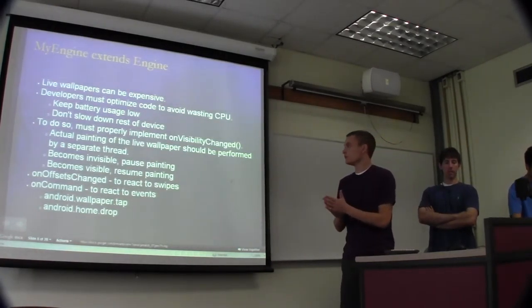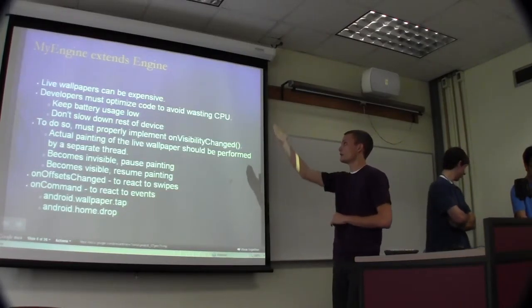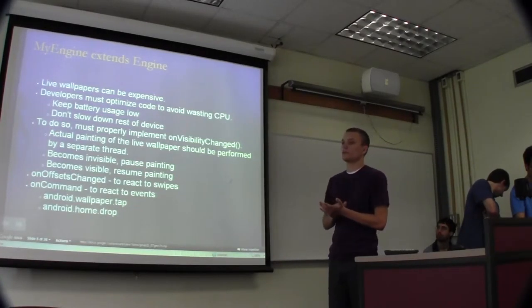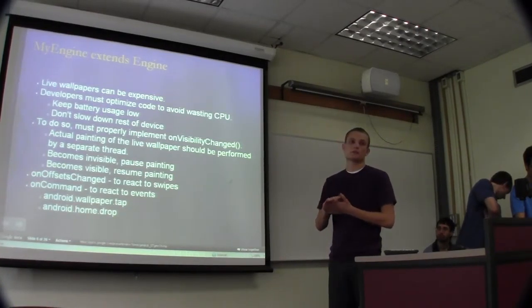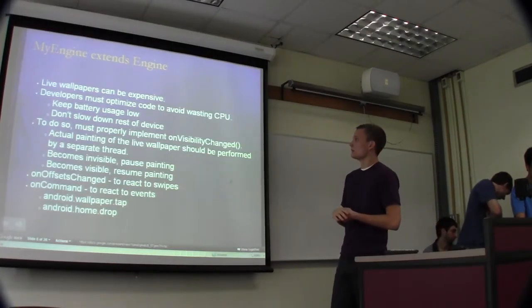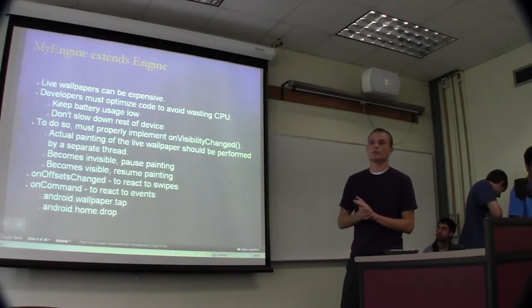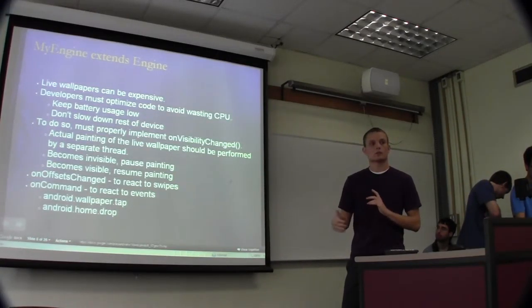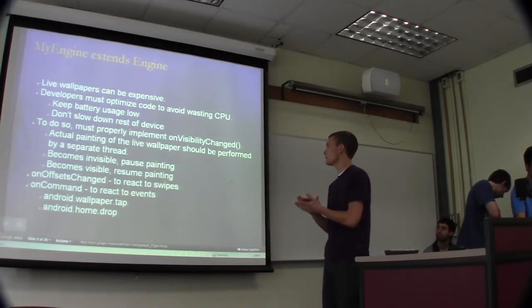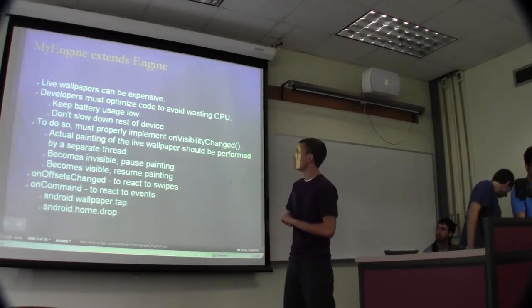So let's talk about the engine a little bit. Obviously a class of your own that extends the engine class. So live wallpapers can be expensive. They can run down your battery, especially for cell phones with larger screens. So developers need to make sure that they're careful with their implementation of their live wallpaper. Make sure that it's only running when it's in fact visible. And to do that they just need to make sure that they've correctly implemented the on-visibility change method.